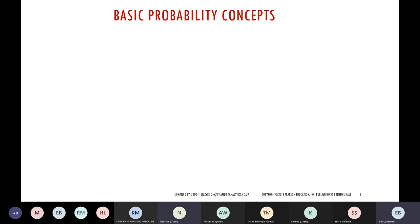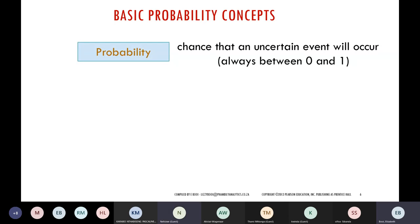So now we're going to learn how to calculate those probabilities — how they arrive at saying there's a 60% chance. A probability is a study of chances. It tells you the chance that a certain event will occur or not occur. If an event will happen, that probability will be 1. If an event will not happen, it will have a probability of 0.